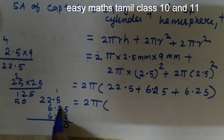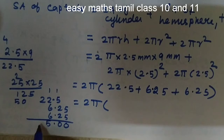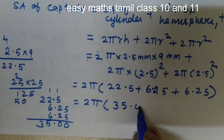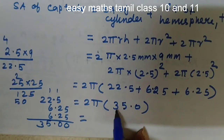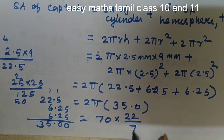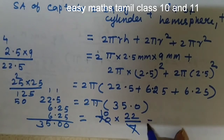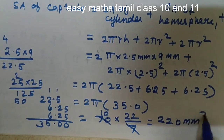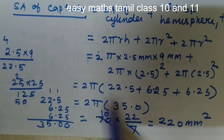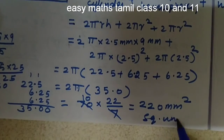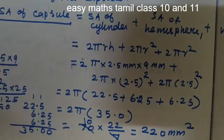Adding these values gives 35. So 2 into 22/7 into 35. Cancelling 7 and 35: 7 fives are 35, so 10 into 22 is 220 mm².